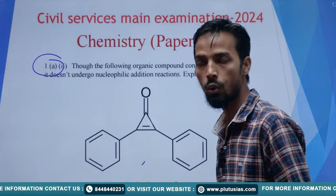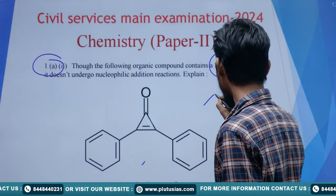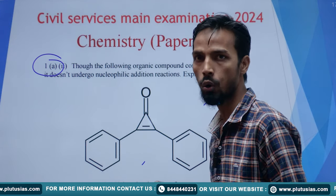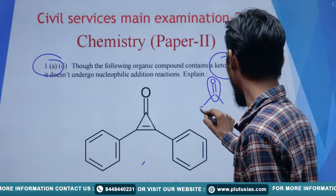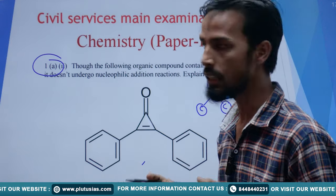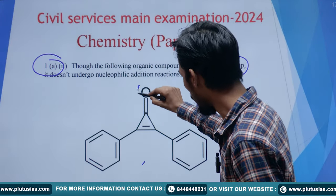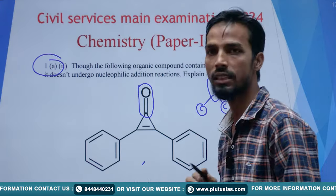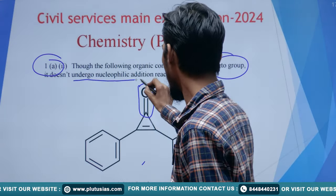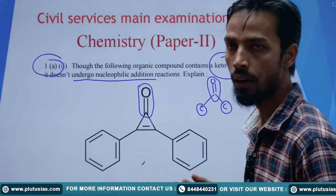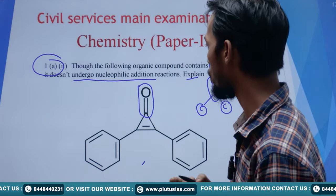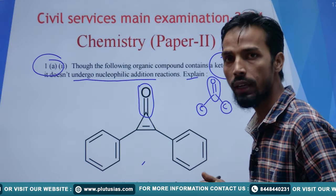We know that any compound having a C=O moiety with carbons attached on both sides is known as a keto group. In this compound we can see that the keto group is present, and the question states that it doesn't undergo nucleophilic addition reaction. We have to explain why this compound is not showing the nucleophilic addition reaction.